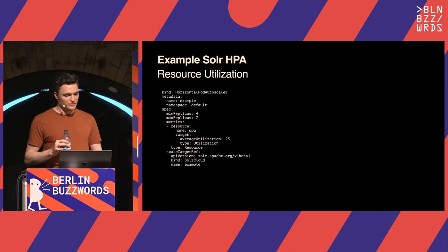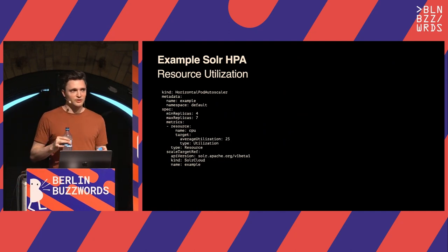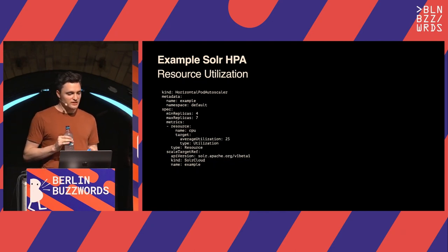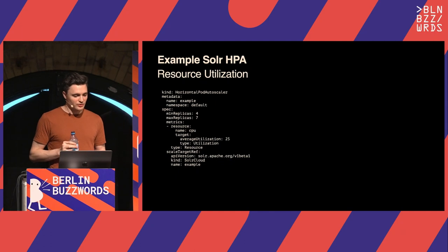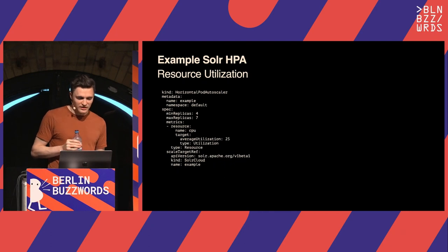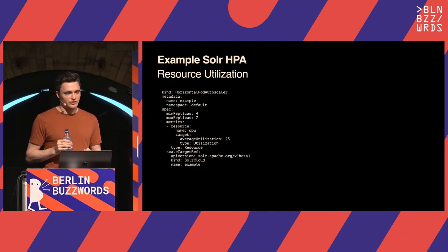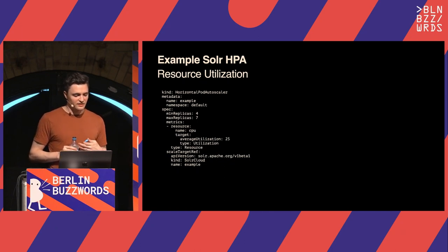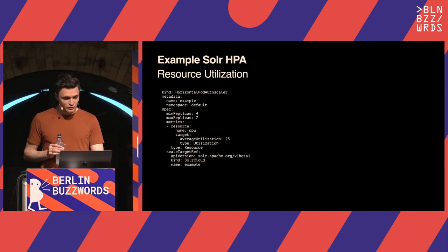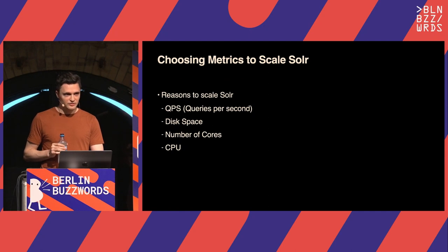This is exactly how you do it. You make your SolrCloud without providing replicas, then create a Horizontal Pod Autoscaler resource. We call it 'example', give it minimum and maximum replicas, and tell it we want an average CPU utilization of 25% across our pods. At the bottom, you pass it that we're autoscaling a SolrCloud and the name of that SolrCloud is 'example'. Pretty simple.